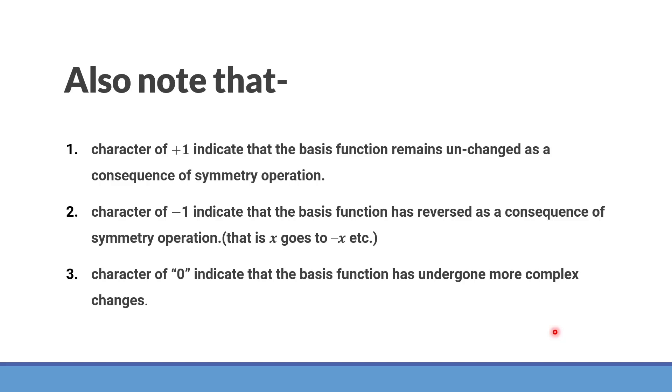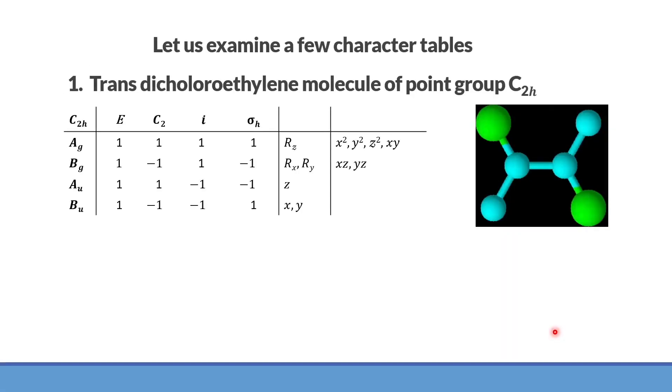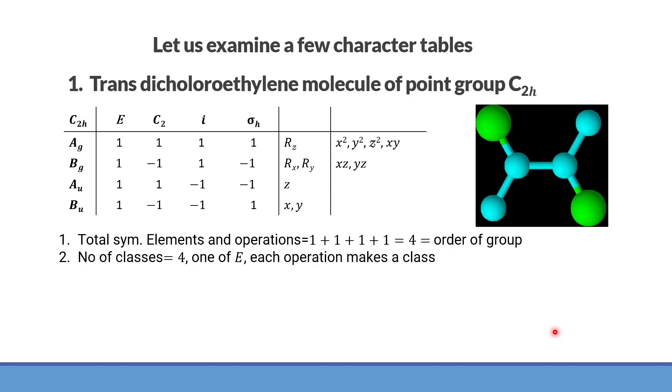The character of 0 indicates that the basis function has undergone more complex changes. That is sometimes quite not easy to understand. So I will just examine a few character tables. Say, C2H point group. If you talk about C2H point group, you will see that there are 4 characters. The total symmetry elements are 4: one E, C2, I, and sigma h. Order of group is 4. Number of classes, they belong to each different class. So number of classes are 4 and therefore, there will be 4 sets of irreducible representations.